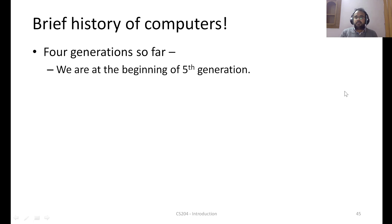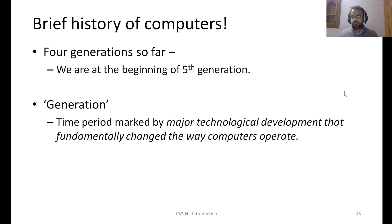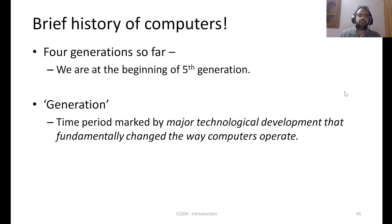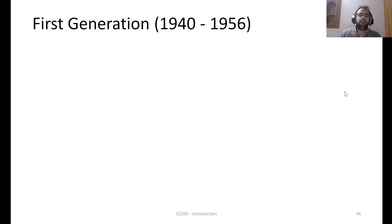I want to give a brief history of how computers have evolved. There have been four generations, and we are at the beginning of the fifth. The term 'generation' in this context means any time period marked by a breakthrough advancement in technology that fundamentally changed the way computers operate. Let's quickly walk through all four generations to understand how each differs from the others.